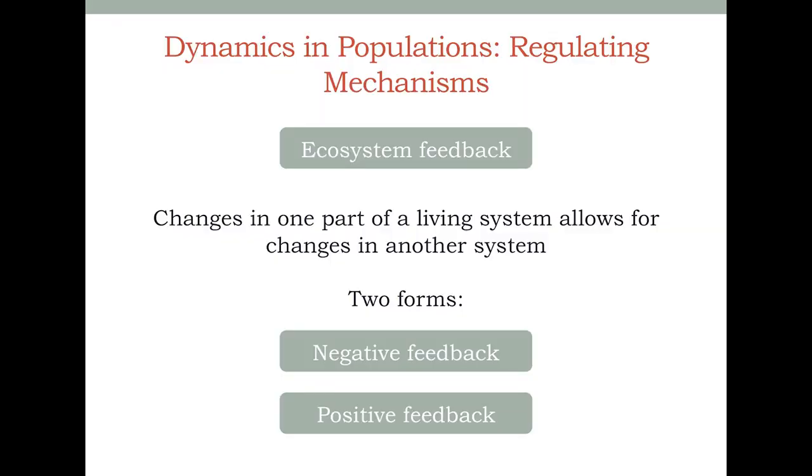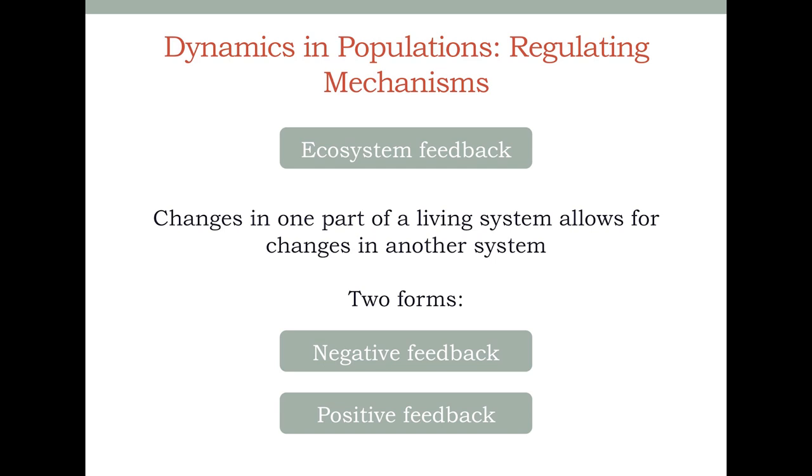Whenever we speak of the dynamics in populations, we simply refer to changes that take place in these populations. One encompassing concept may help us understand this: the ecosystem feedback. In simplicity, ecosystem feedbacks underlie the fact that the change in one part of a living system allows for changes in another system. In other words, the ecosystem feedback is a counter-bouncing effect that helps regulate the overall state of the ecosystem. This regulation can be of two forms, namely the negative feedback mechanism and the positive feedback mechanism.